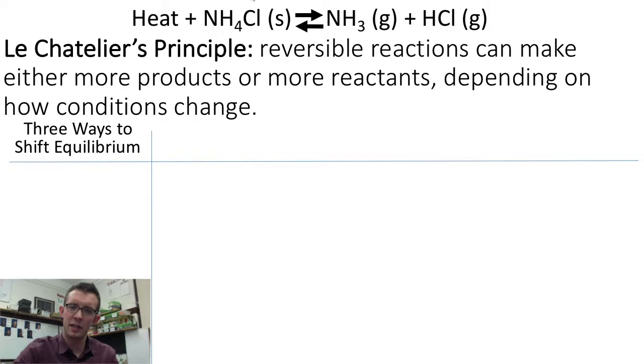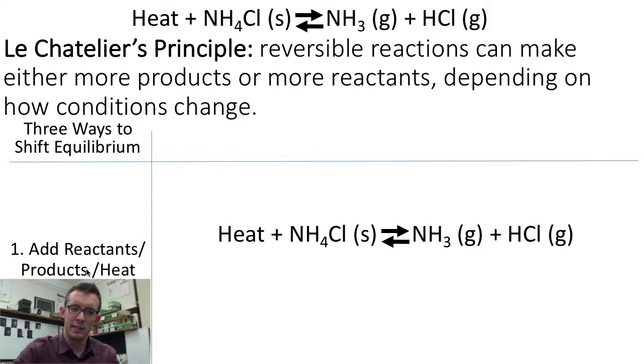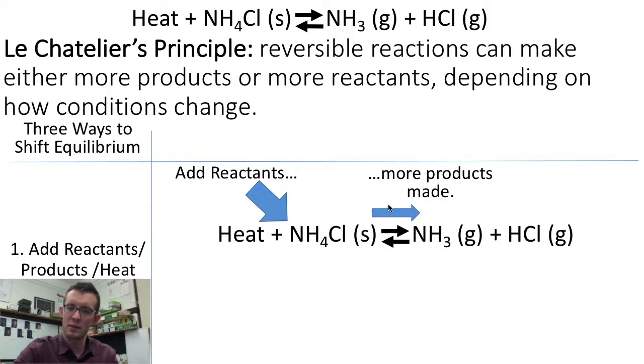Now we call this idea Le Chatelier's Principle. One of the ways to shift the reaction either forwards or backwards is to add more reactants, products, or heat. So in our example here, if we were to add more reactants, in this case either add more heat or add more ammonium chloride, that would mean that more products would get made in this reaction.